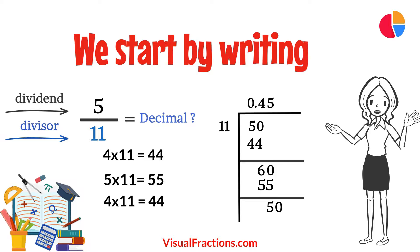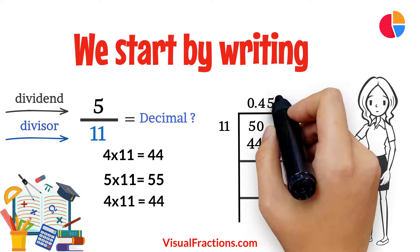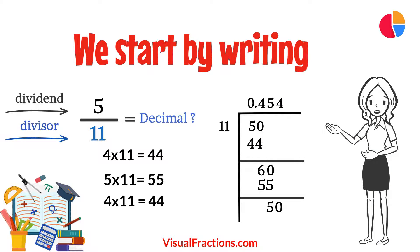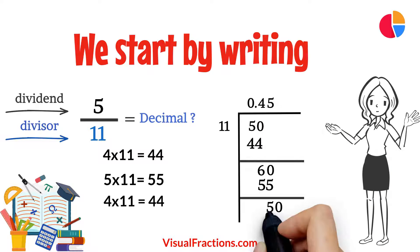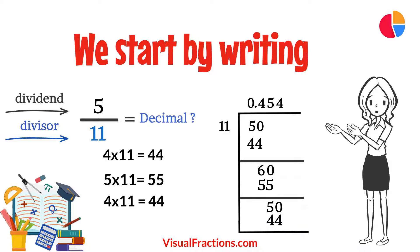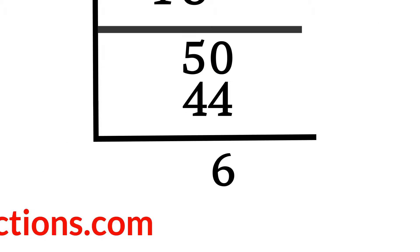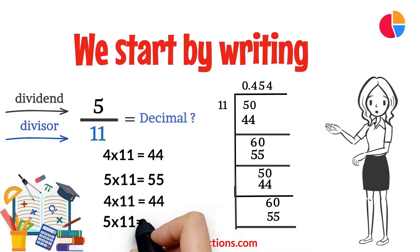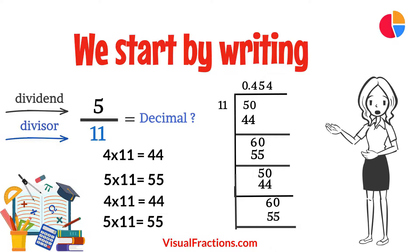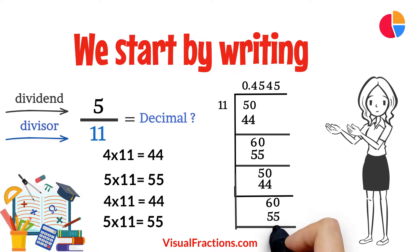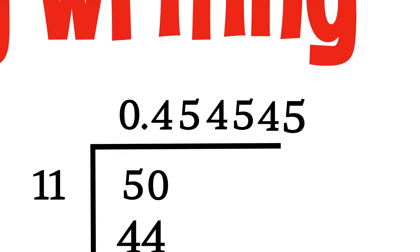11 fits into 50 4 times. We add 4 to the quotient to get 0.454, multiply 4 by 11 to get 44, and subtract from 50 to get a remainder of 6. We then bring down another 0 to get 60. 11 goes into 60 5 times, adding 5 to the quotient to make it 0.4545. Subtracting 55 from 60 leaves a remainder of 5.